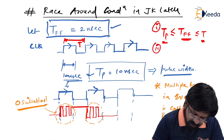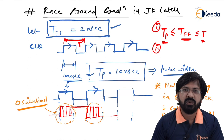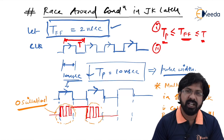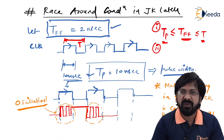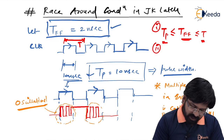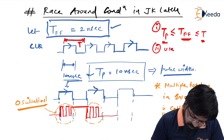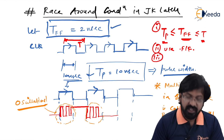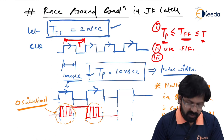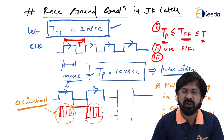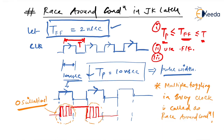The second solution is to not use a latch at all — use edge triggering instead. If edge triggering is used, this problem will never occur because in edge triggering the flip-flop does not get enough time to toggle multiple times; it only toggles at that particular instant. The third solution, if you still want to stick to a latch, is to use MSJK configuration — that is, master-slave JK configuration.